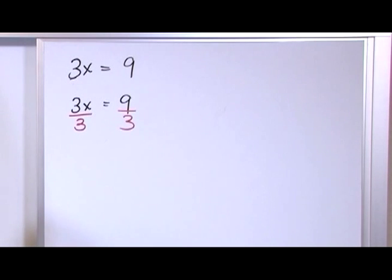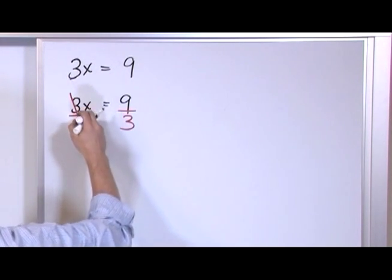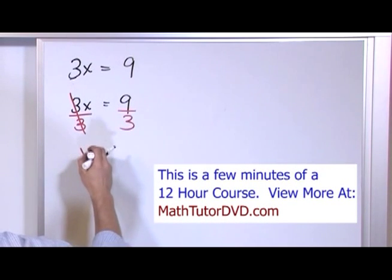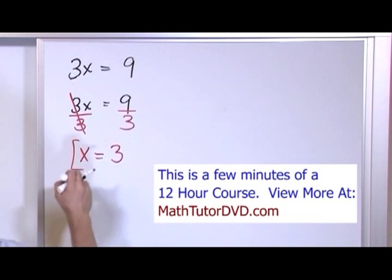Why do I do that? It's because when I do it, the 3's are going to cancel out. So I'm going to have x is equal to 9 divided by 3 gives me 3. That is the answer.